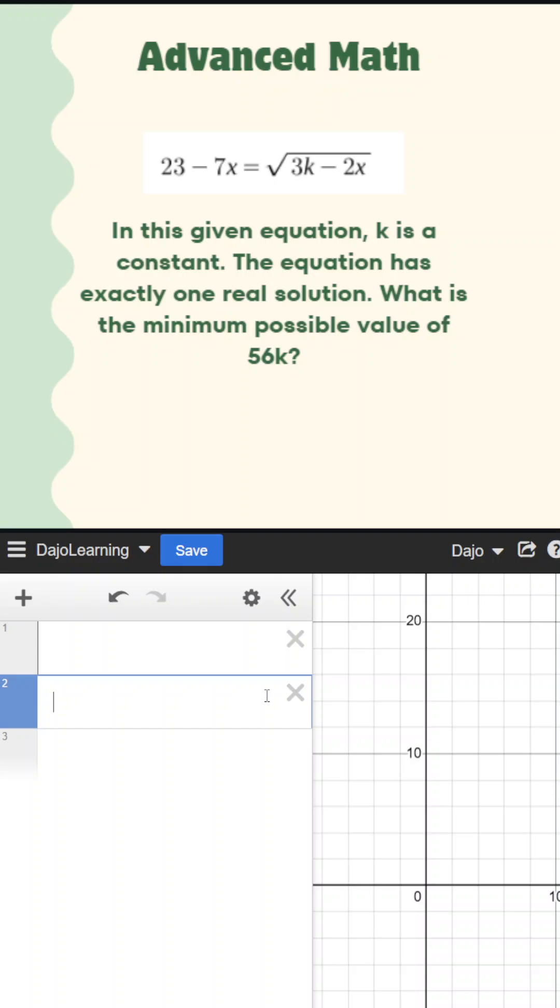Hey, it's Dajo here. Let's do an advanced math question. In this given equation, k is a constant. The equation has exactly one real solution. What is the minimum possible value of 56k?